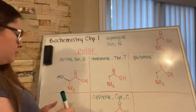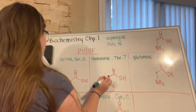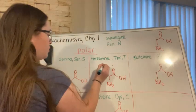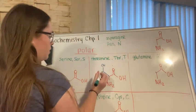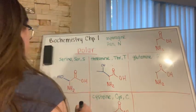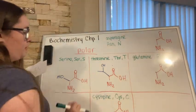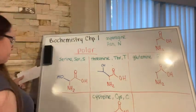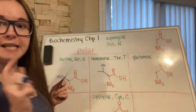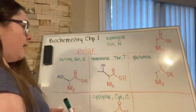Next we have threonine, and threonine has an OH group with an extra carbon. Its three-letter abbreviation is T-H-R and its one-letter abbreviation is T.